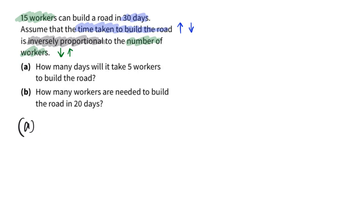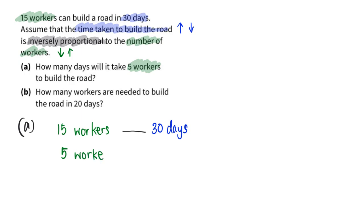For part a, I write: 15 workers took 30 days to complete the road. Now if we have 5 workers — since they are inversely proportional and work at the same rate — we divide by 3 here, and because it is an inverse proportion question, we multiply by 3 on the other side. That gives 90 days as the answer for part a.